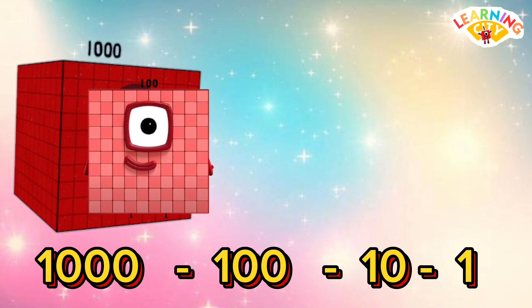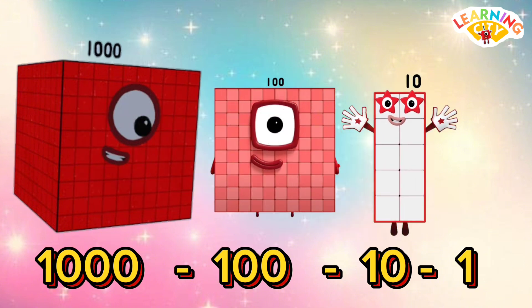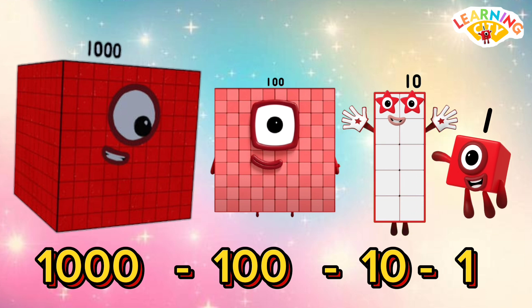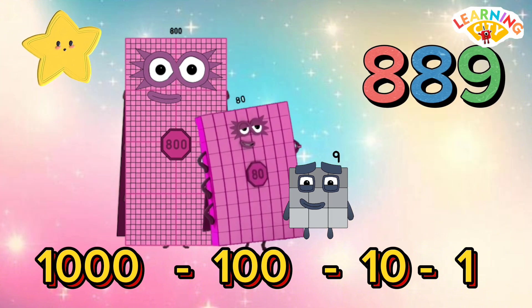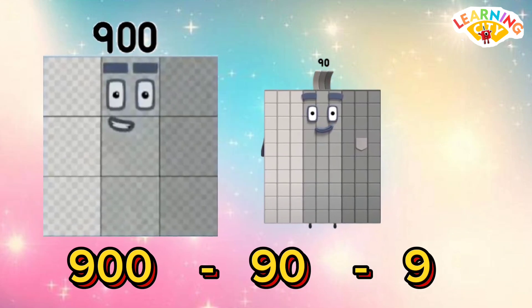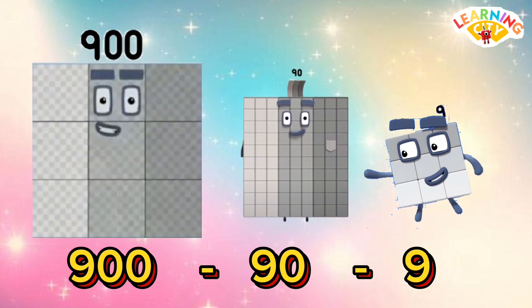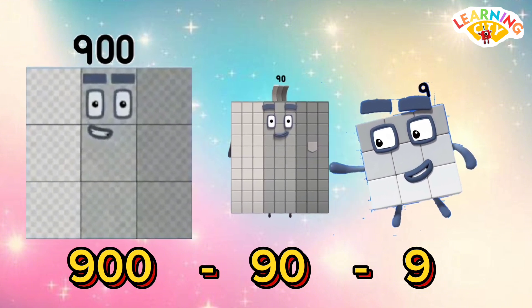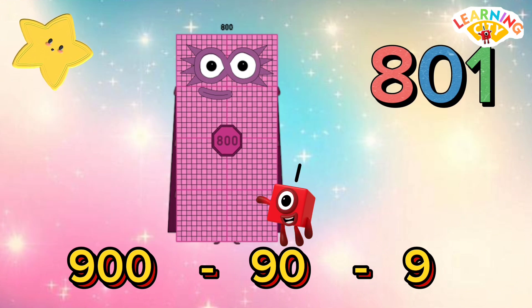1000 minus 100 minus 10 minus 1 is equals to 889. 900 minus 90 minus 9 is equals to 801.